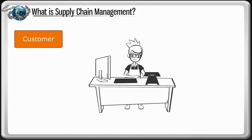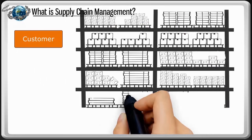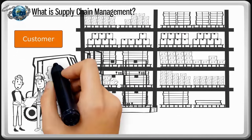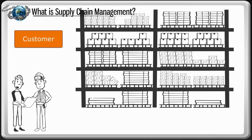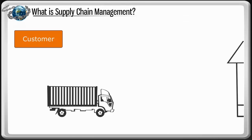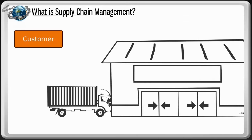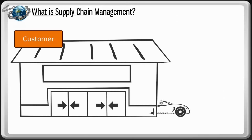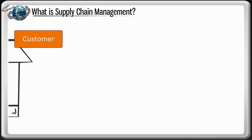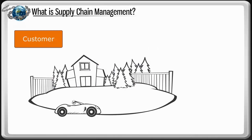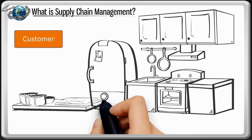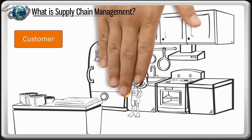Once a customer places an order, the warehouse employees locate the correct variety and place it on another truck that delivers the cheese to the customer. The cheese is now in your refrigerator and ready for your next snack. Getting the cheese to your refrigerator can be a complicated process, which is why effective and productive supply chain management is so important.